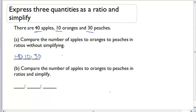Now, the next thing we want to ask ourselves is, is this ratio in simplest form? So part B says compare the number of apples to oranges to peaches in ratios and simplify. Now I have to make sure that this ratio is simplified.